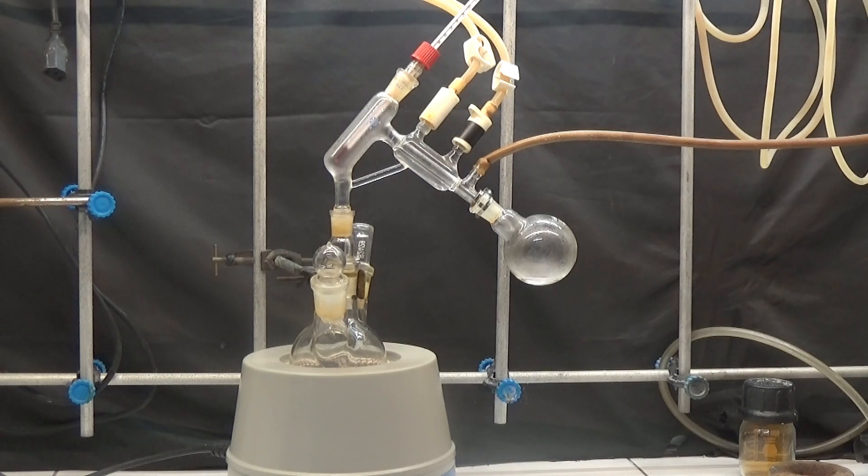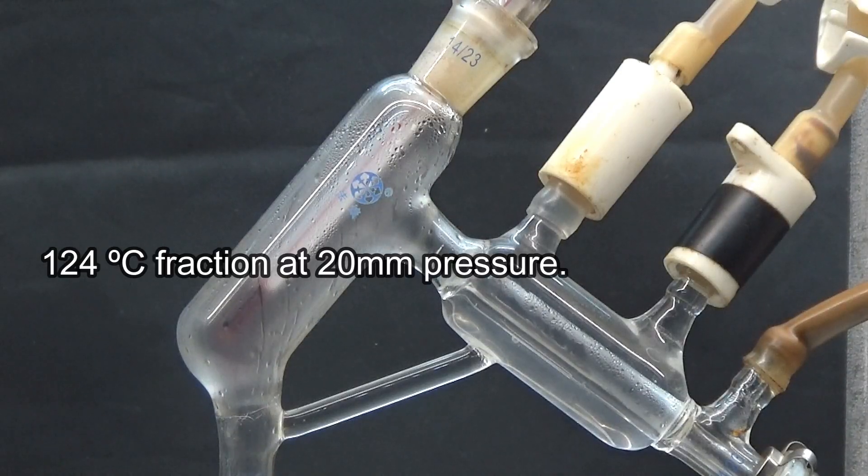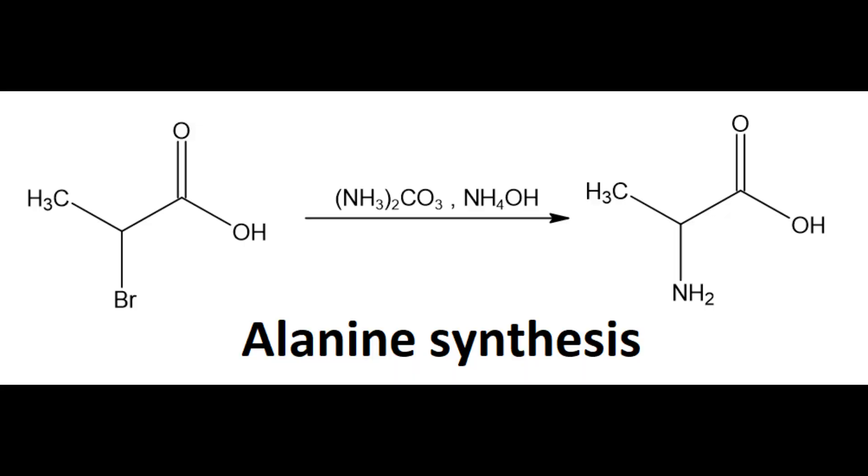2-bromopropionic acid can be distilled under vacuum by collecting the 124 degree fraction at 20 millimeters pressure. My purpose of this synthesis was to obtain 2-bromopropanoic acid for the preparation of alanine, for which this purity is already sufficient.